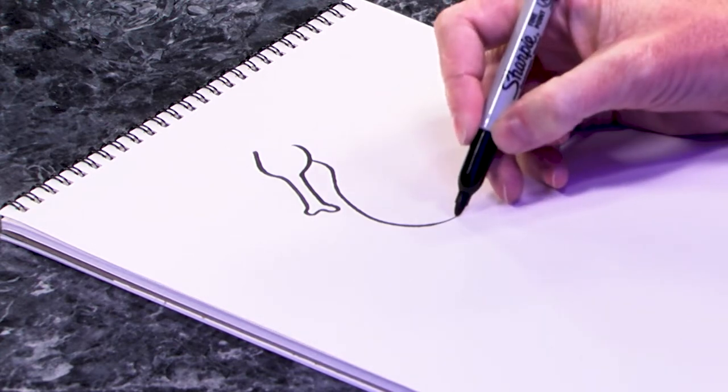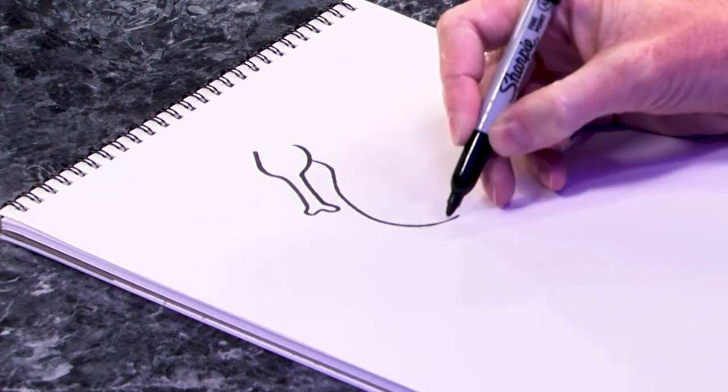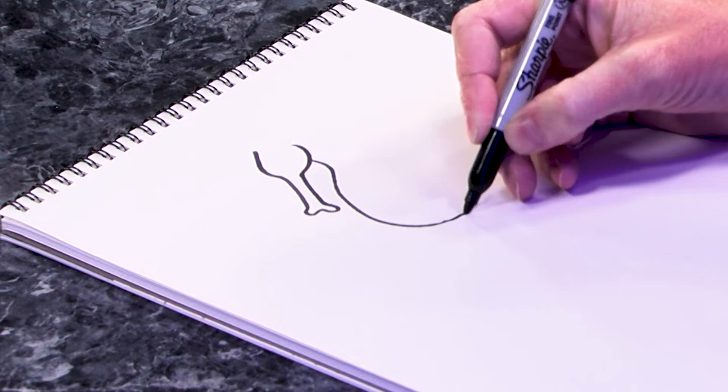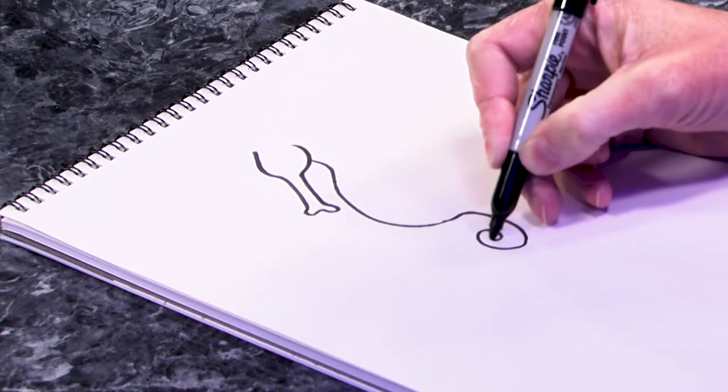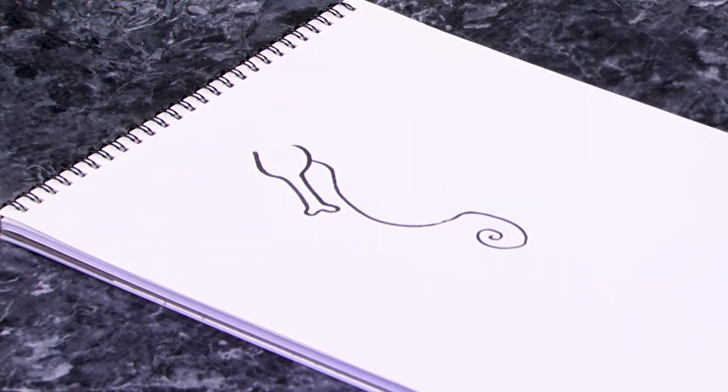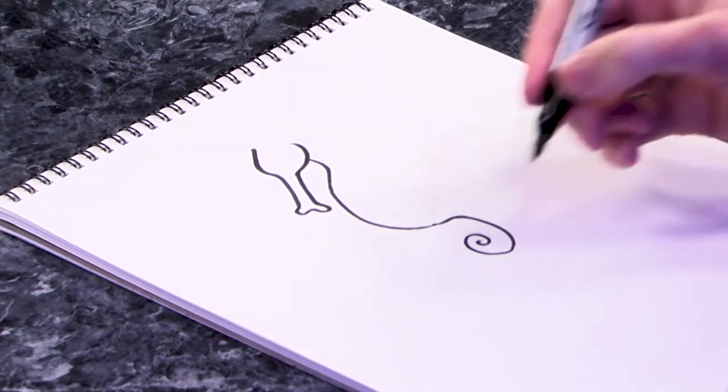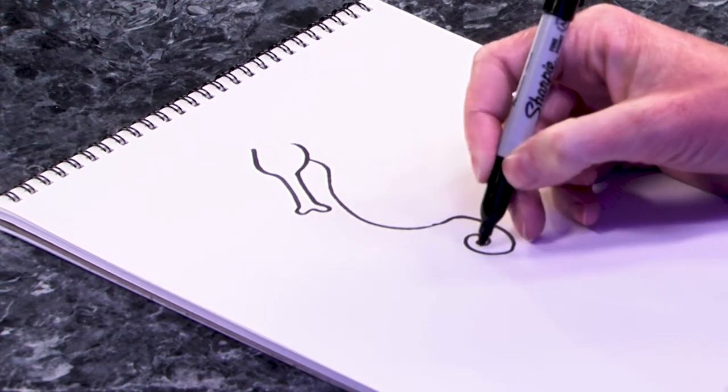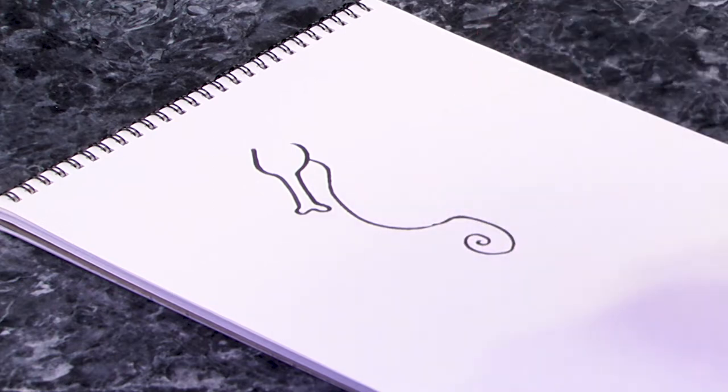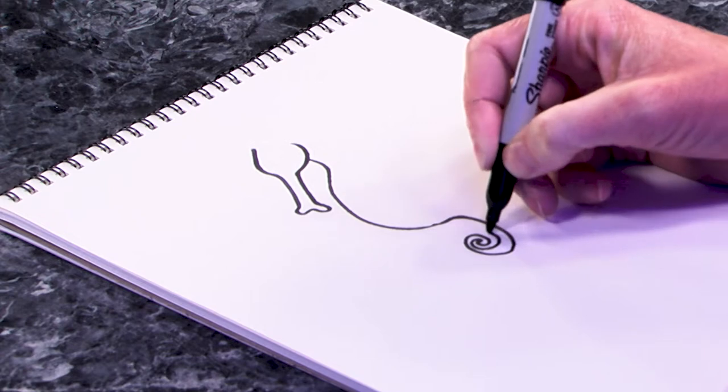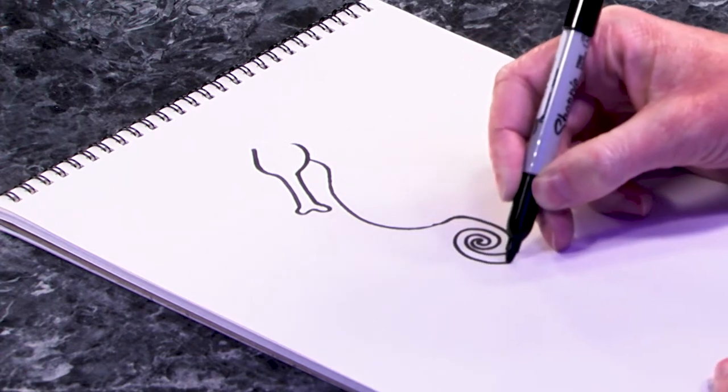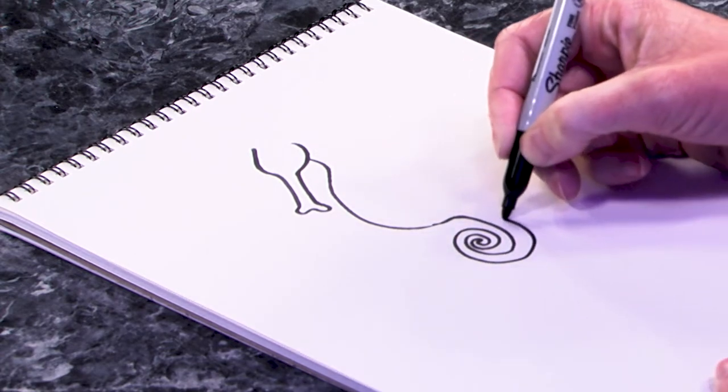Next he's going to want a tail or she. Your seahorse can be whatever you'd like it to be. Then inside of this we're going to spiral our way back out and basically just try to stay kind of parallel to what you just made. Like that.